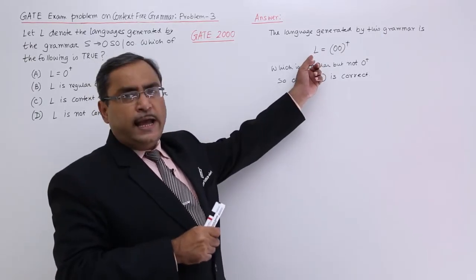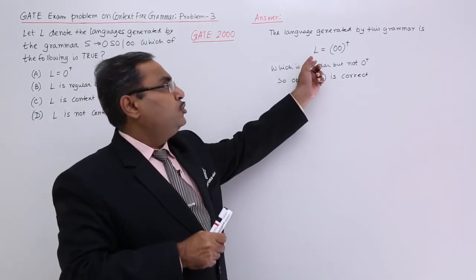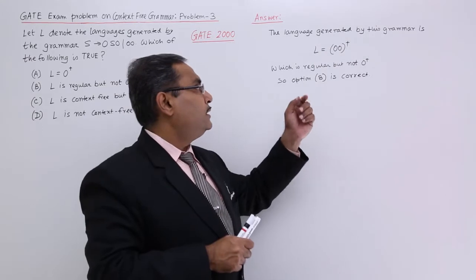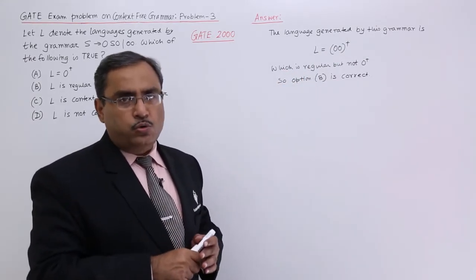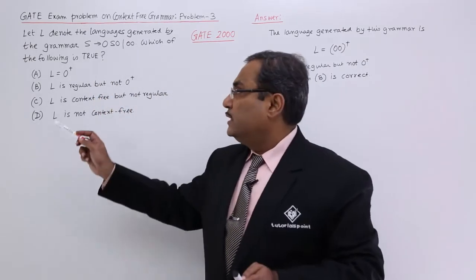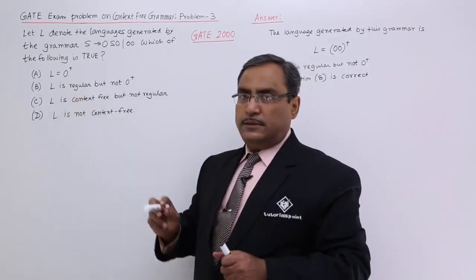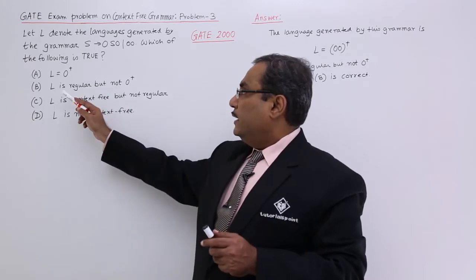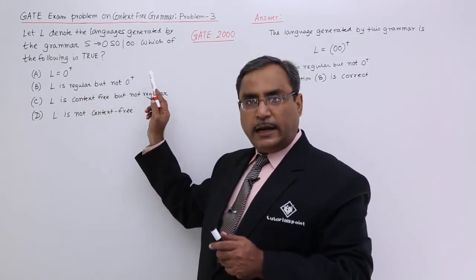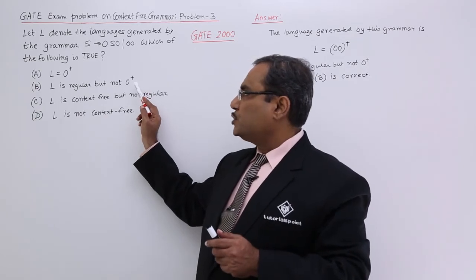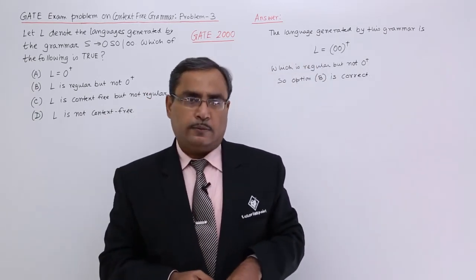As a result, I can write that this language is (00)⁺ which is regular, but obviously (00)⁺ is not equal to 0⁺. Here the language will be 0⁺ - that is not at all true. The language will be regular but not (00)⁺, I think that is correct, so option B will be the right answer.